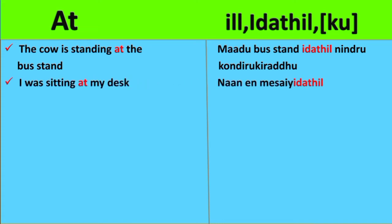The next example is: 'I was sitting at my desk.' In Tamil: Naan yen mesai edathil utkkarandu kondi irikkiyirudu. Naan means I, yen mesai edathil means 'at my desk', and utkkarandu kondi irikkiyirudu means 'was sitting'.